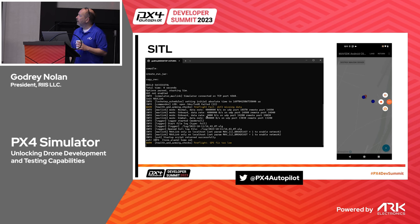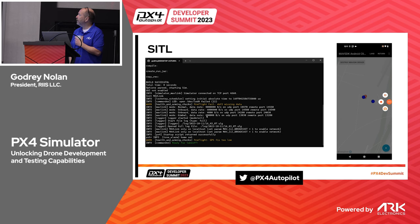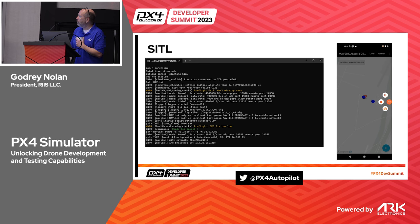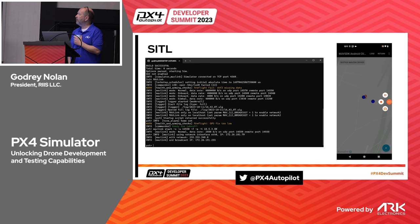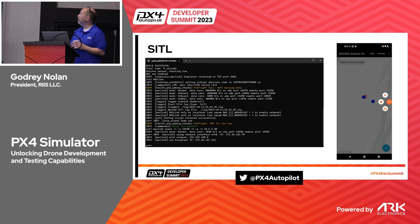The major thing you need to know to get this to communicate is that you need the IP address of the phone. Go to the phone and find out what the IP address is. Make sure that you're on the same Wi-Fi, and then use that mavlink start command - that's what causes the connection between my laptop and the Android app.